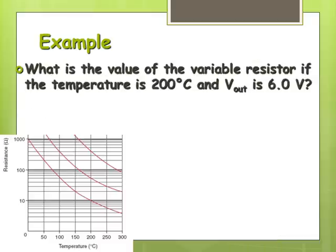Okay, so the question is what's the value of the variable resistor if the temperature is 200 degrees and V out is 6 volts? Okay, so V out is across the thermistor and the temperature is 200 degrees. At 200 degrees we have 10 ohms of resistance. So that's the first step is work out the thermistor resistance.